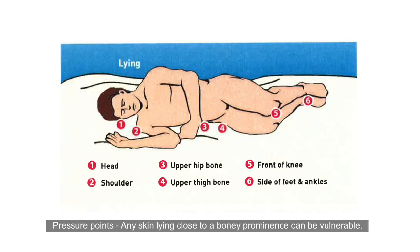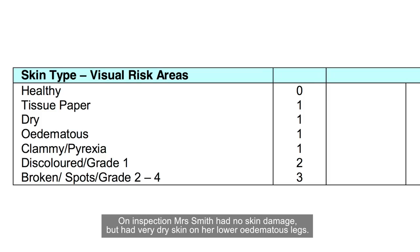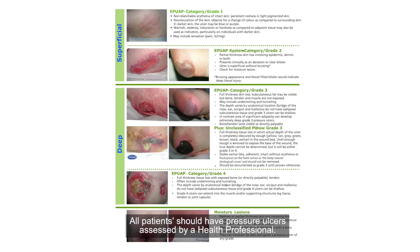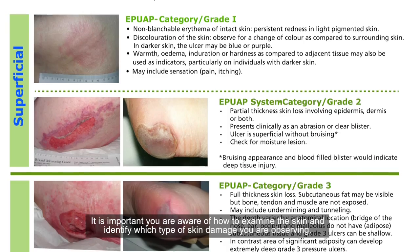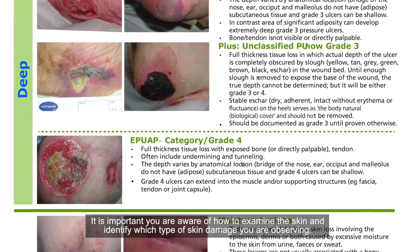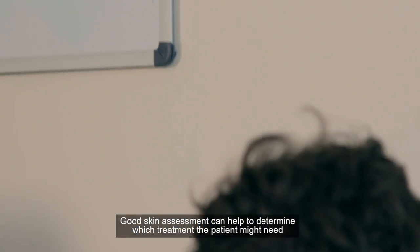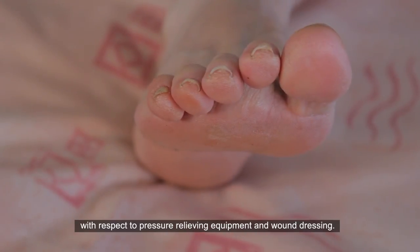Pressure points — any skin lying close to a bony prominence can be vulnerable. On inspection, Mrs. Smith had no skin damage but had very dry skin on her lower oedematous legs. All patients should have pressure ulcers assessed by a health professional. It is important to be aware of how to examine the skin and identify which type of skin damage is observed. Good skin assessment can help determine which treatment the patient might need, with respect to pressure relieving equipment and wound dressing.